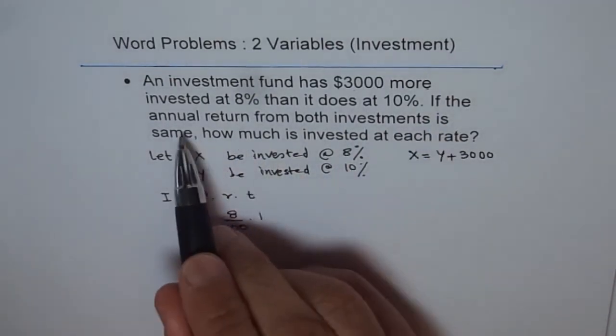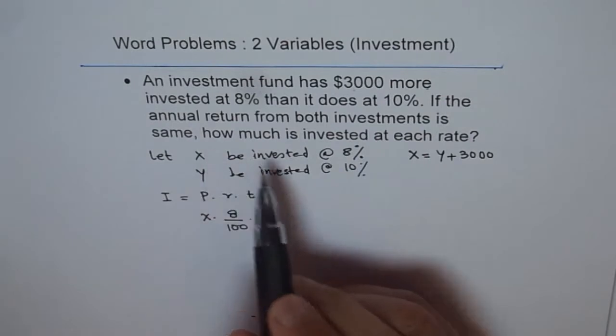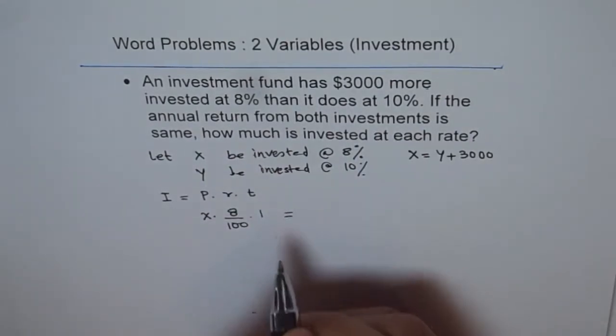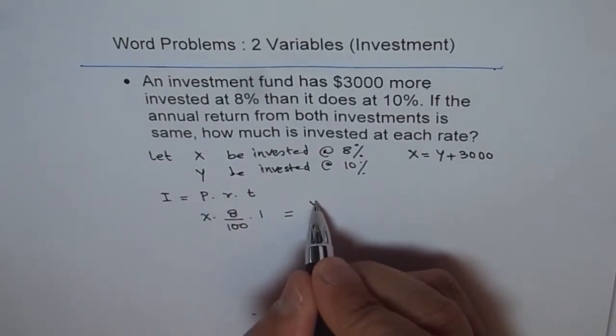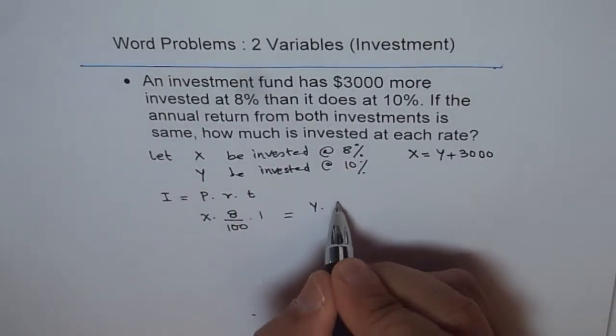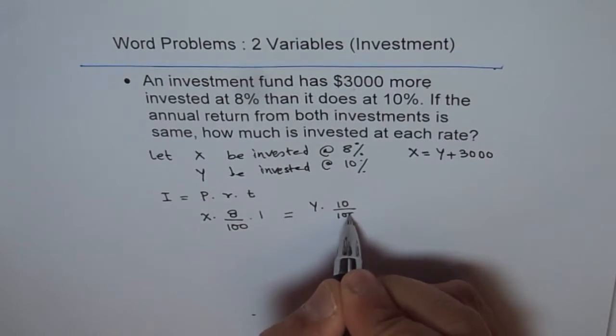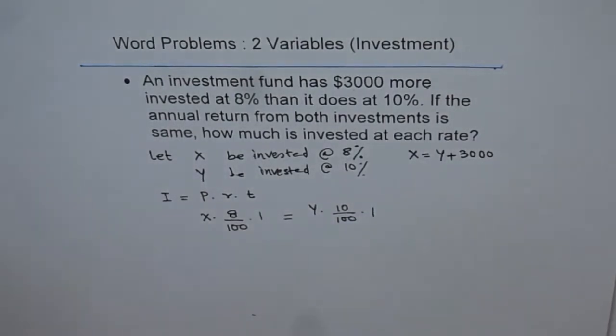Now if the annual return from both is the same, that means we have to equate it to investment return from Y. So Y will be Y times 10%, which is 10 over 100 times 1. So we get our equation.